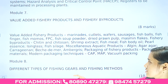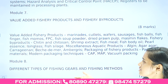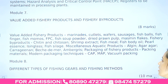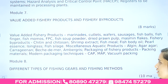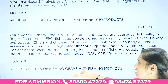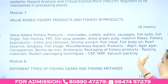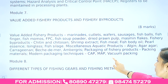Fishery by-products covered in Module 7 include chitin, chitosan, shrimp extract, fish meal, fish body oil, pearl essence, isinglass, fish silage, and various aquatic miscellaneous products such as algae — including agar-agar, carrageenan, and ambergris. Packaging of fishery products is also covered, including packaging materials and modern packaging techniques such as CAP, MAP, and vacuum packing.